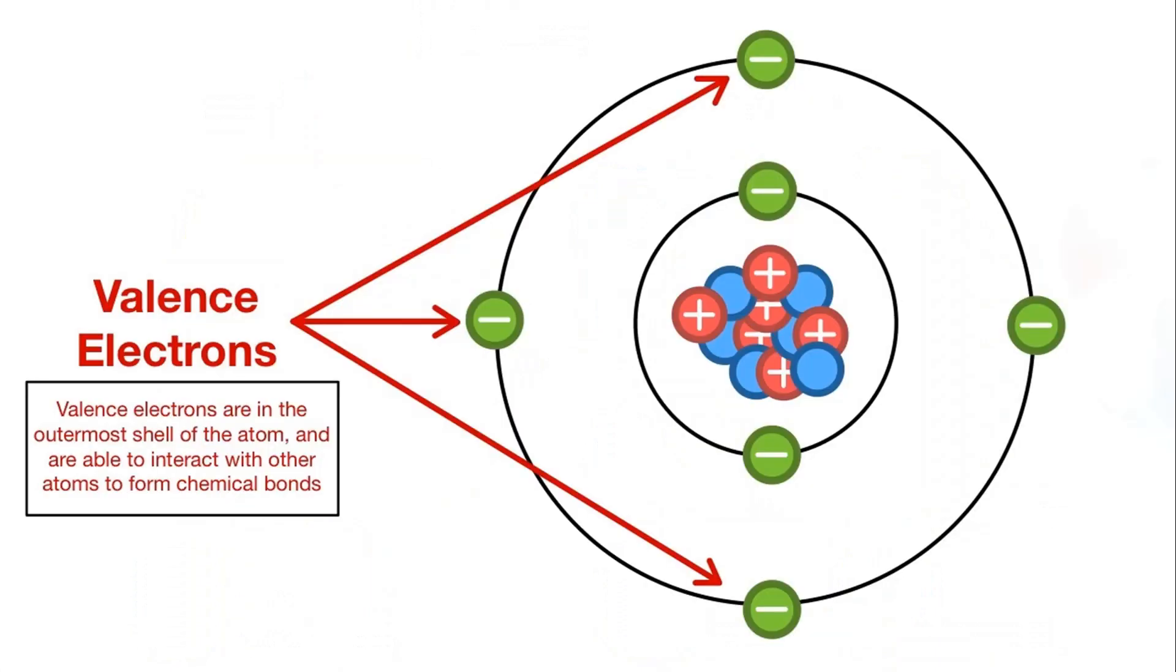The term valence quark is based on the valence electrons of atomic physics. These are the outer shell electrons, which are responsible for the chemical properties of atoms.